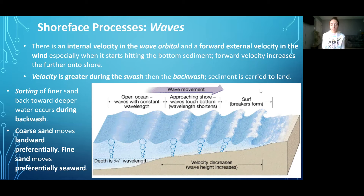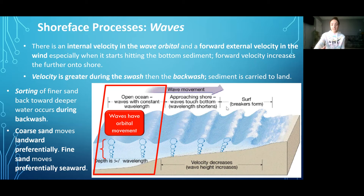First, we have the furthest-out wave orbitals that are not hitting the bottom sediment yet and have a constant internal velocity in a circular or orbital motion. We can see that the wave orbitals only go so deep, and the intensity of the wave orbital is smaller as we go down in depth. This is because wind, which causes waves to form, can only penetrate so deep into the ocean, so it only affects surface water.